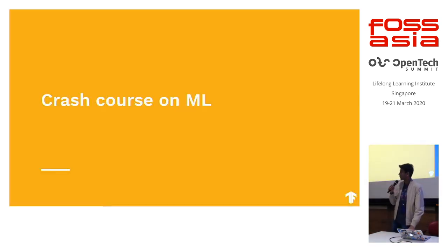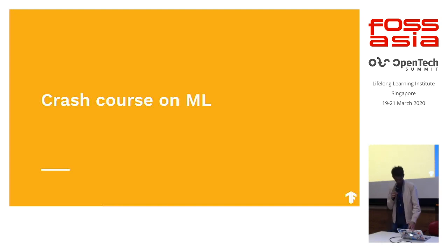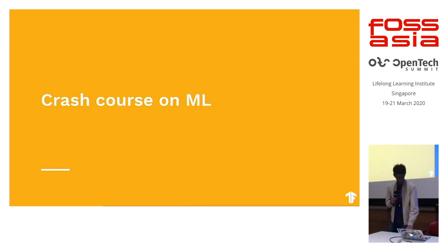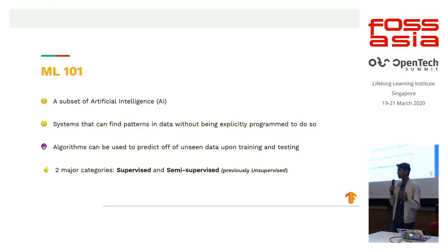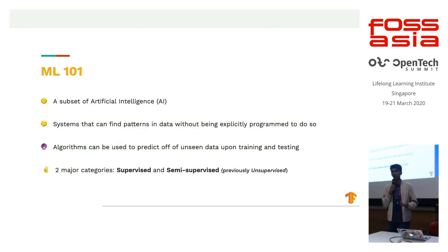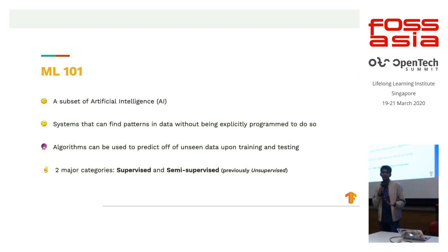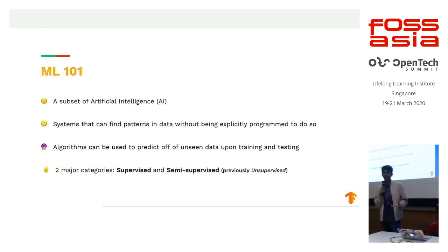Now I'll give a quick recap on machine learning in general. Machine learning is a subset of artificial intelligence where you give data to a computing system, it finds patterns in that data, and it's able to predict off of unseen data.